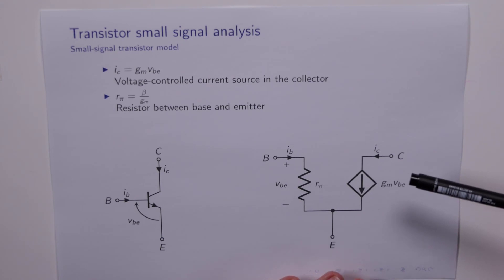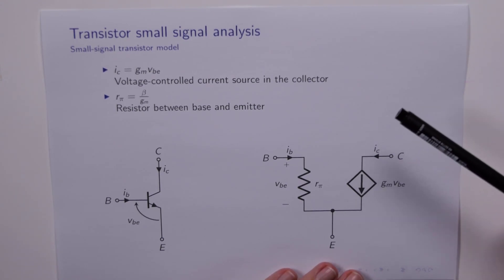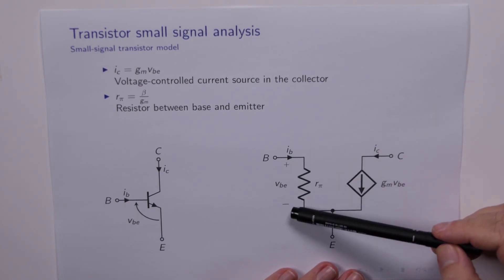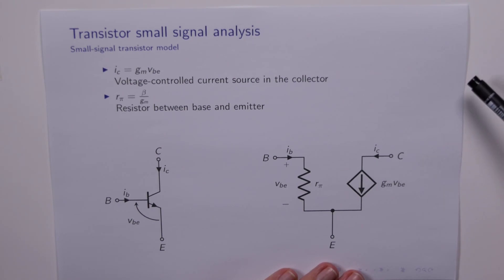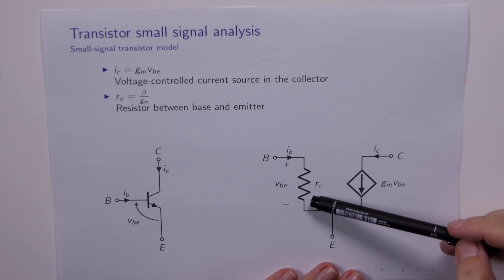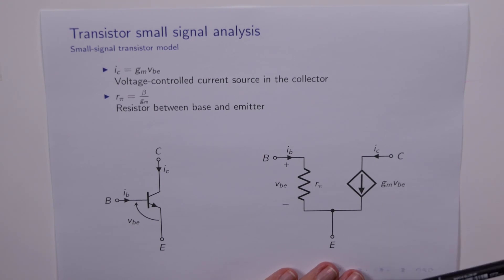So when we're doing an analysis we simply have to replace the transistor with this equivalent circuit, and notice how the so-called electronics has again been reduced to simple linear circuit theory, where we have a simple resistor and a simple dependent current source. These calculations we know how to do well.